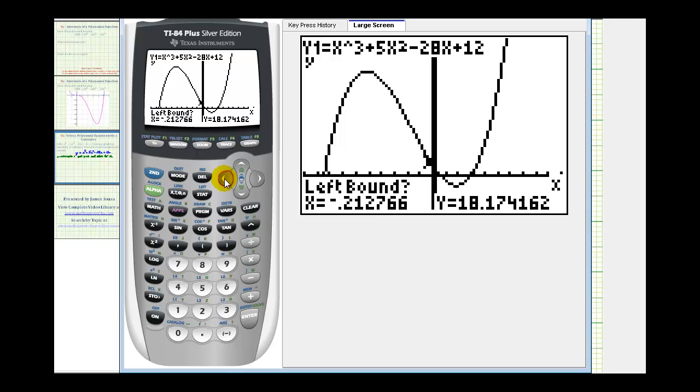So I'm going to press the left arrow and hold it down. Now I want to stop it when it's below the x-axis. It's a little hard to see, but right here it is below, and therefore left of this x-intercept. So I'll press enter.